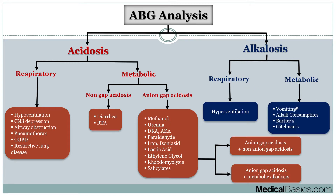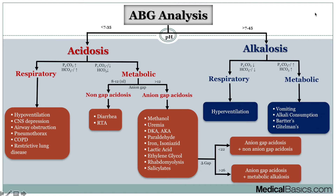The last type is metabolic alkalosis. There are other causes like alkali consumption and Bartter's and Gitelman's syndromes, which are hereditary kidney diseases. But the most common cause we think about is vomiting. When you vomit, you're expelling all of your stomach acid — that acidic content is being lost, which is why vomiting causes an alkalosis.